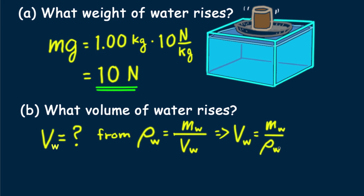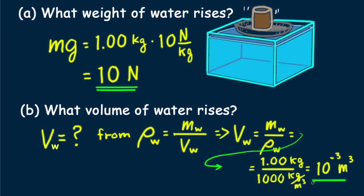or equivalently, the mass of water displaced is equal to the mass of the iron. The density of water is 1000 kg per meter cubed, so volume of the water equals 10 to the minus third meters cubed, which turns out to be 1 liter.